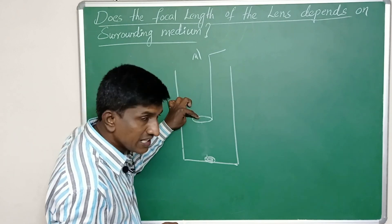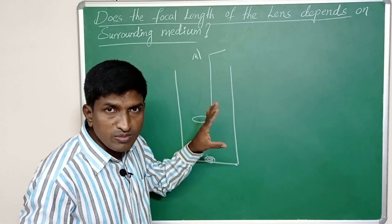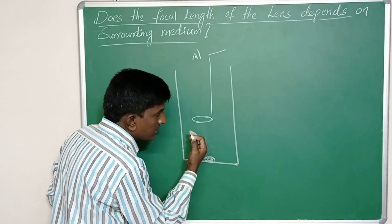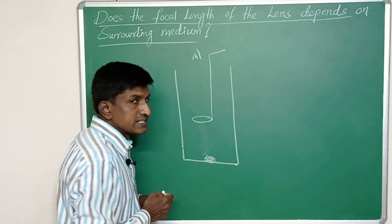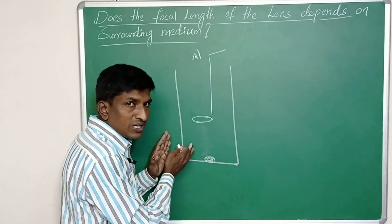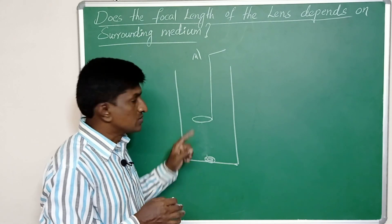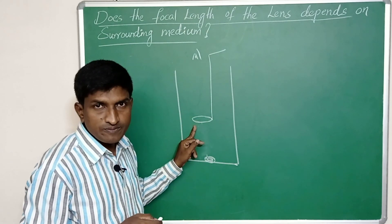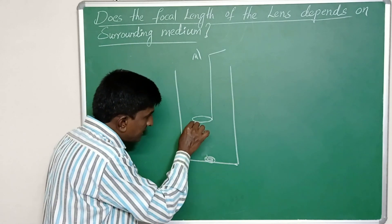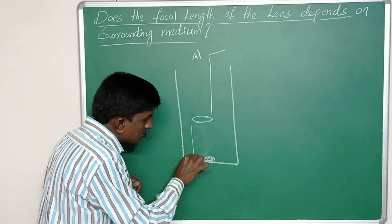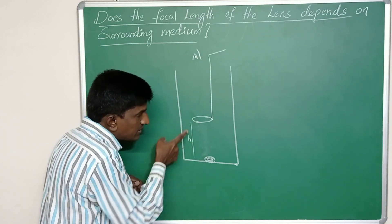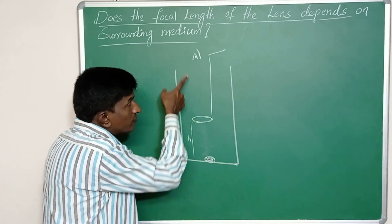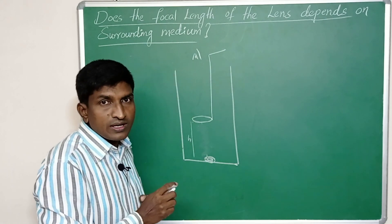The image we observe of the stone through the lens is a virtual image. The surrounding medium for this lens is air, since no water has been added yet. We kept the lens at a certain height to observe the stone in air.